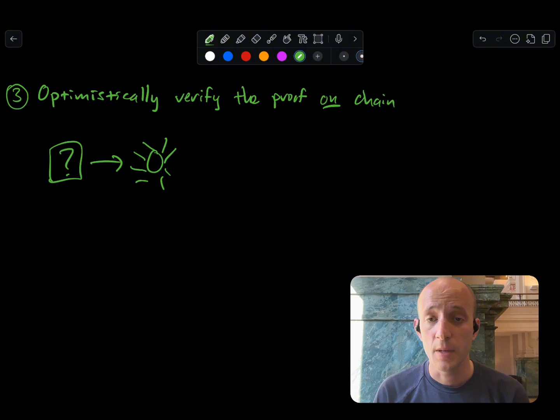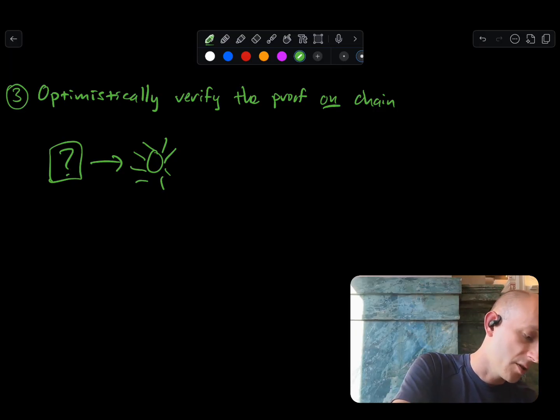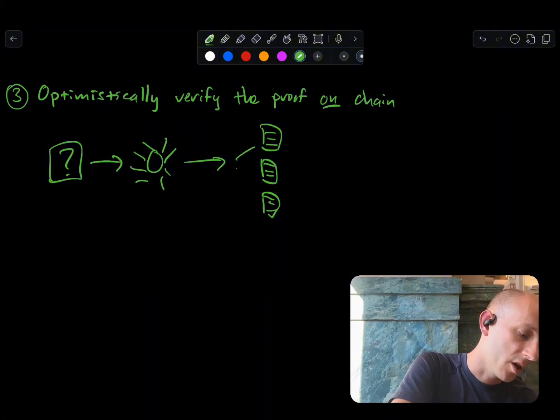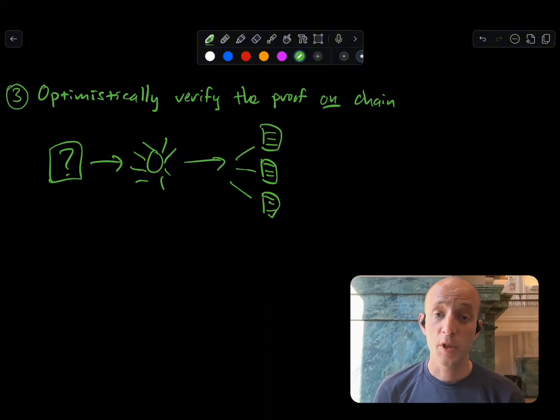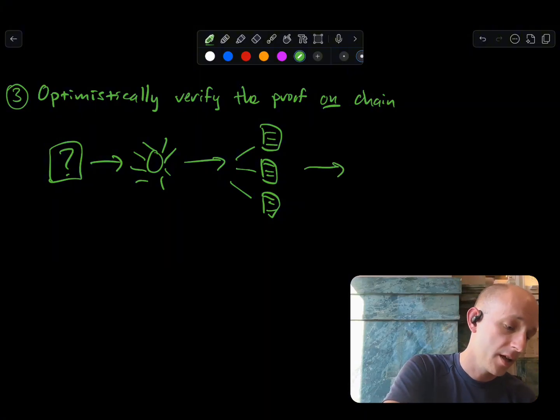the technique that, say, BitVM2 does is it actually breaks up the computation into a bunch of smaller chunks. Each of those chunks can be executed on Bitcoin. So now, we look at one of these several smaller chunks. If the computation is actually correct, all of the chunks will be correct. But if the computation was in fact wrong, and the challenge is valid, then one of the chunks has to be incorrect. And we can reason about that on-chain to get our output.